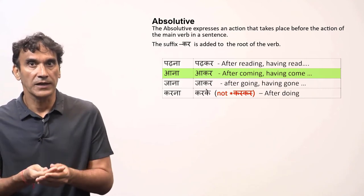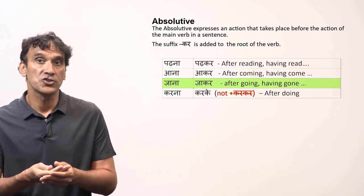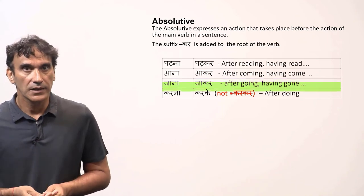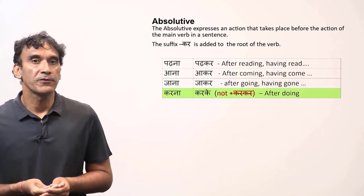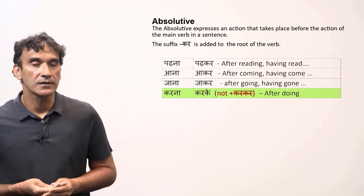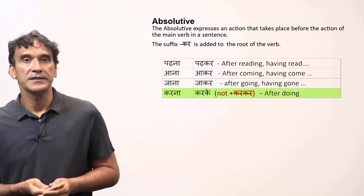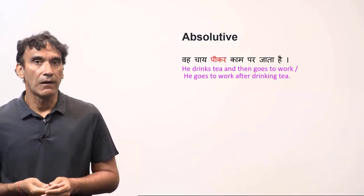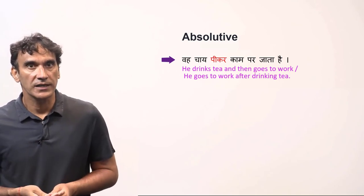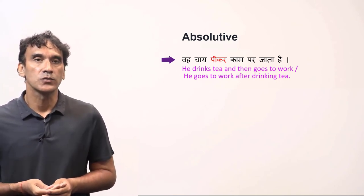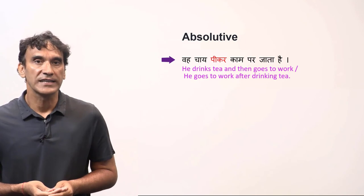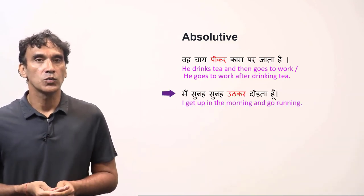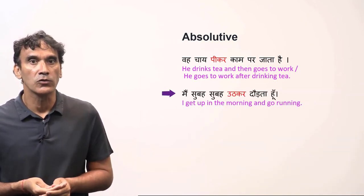The verb 'ana' has the absolutive 'akar' (after coming / having come). From 'jana', it is 'jakar' (after going / having gone). The verb 'karna' has the absolutive form 'karke' (after doing / having done). Example sentences: 'vo chai peekar kaam par jata hai' — he goes to work after drinking tea. 'Main suba suba utkar doorta hoon' — I get up early in the morning and go running.